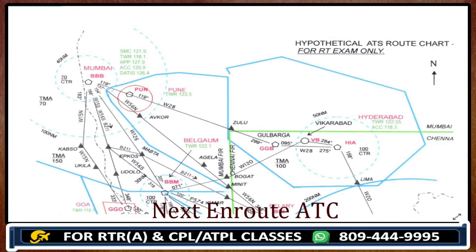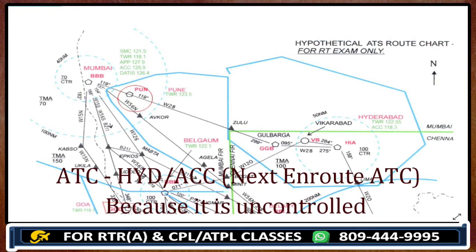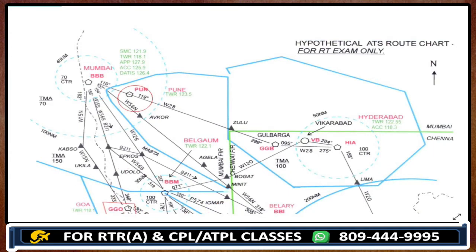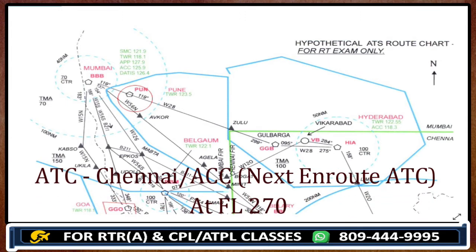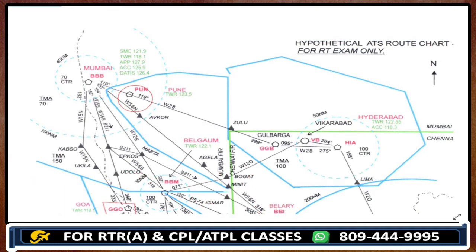From Mumbai to Hyderabad, once you cross this uncontrolled area you enter Hyderabad TMA, so the next en route ATC would be Hyderabad Control — that is the correct ATC at Flight Level 250. Now at Flight Level 270 overhead Pune: as I told you, there is an upper limit applicable in chart number seven — above Flight Level 255 the en route ATC would be Chennai Control. So the correct ATC overhead Pune at Flight Level 270 is Chennai Control.